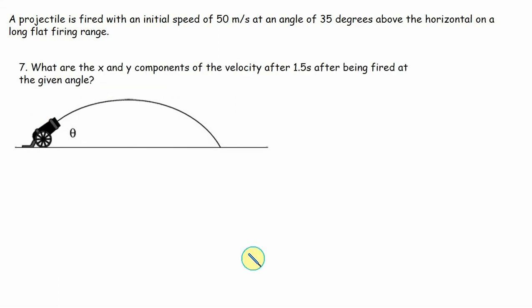Let's look at question seven. What are the x and y components of the velocity after one and a half seconds after being fired at the given angle? So we're fired at 35 degrees. Our projectile is somewhere here. It took 2.92 seconds to go to the top. So we're not to 2.92 seconds. We're one and a half seconds. So we're somewhere between firing and the maximum height. So I want to know the x and y components of the speed of that projectile at that point. So the time we know is one and a half seconds. I know the initial speed in the x direction is 40.96. I know the initial speed in the y direction is 28.68. And I know the acceleration due to gravity is negative 9.81.